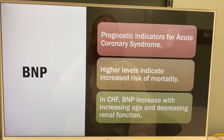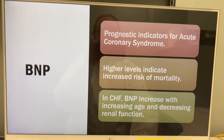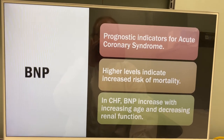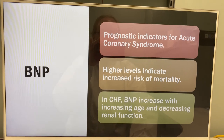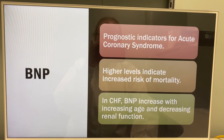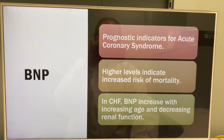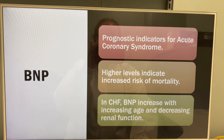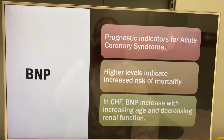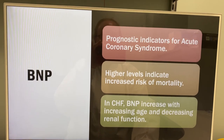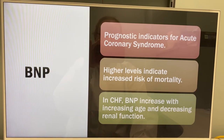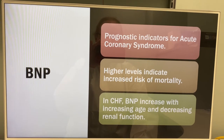BNP is a good prognosis indicator for acute coronary syndrome — if it's high, then your prognosis isn't very good and there's a chance of mortality. BNP increases with increasing age and decreasing renal function.